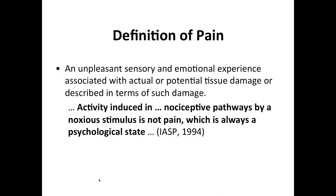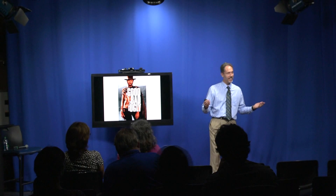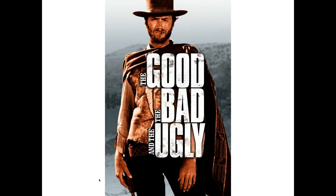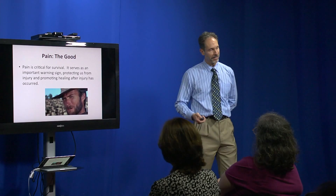My title says The Good, the Bad, and the Ugly. I realize that many of the students here have no idea what this movie is. This is a spaghetti western that was released in about 1966. I was actually too young to watch it then, but I've seen it since. This is Clint Eastwood; it's a classic western—bring it up on Netflix or something and you might enjoy that.